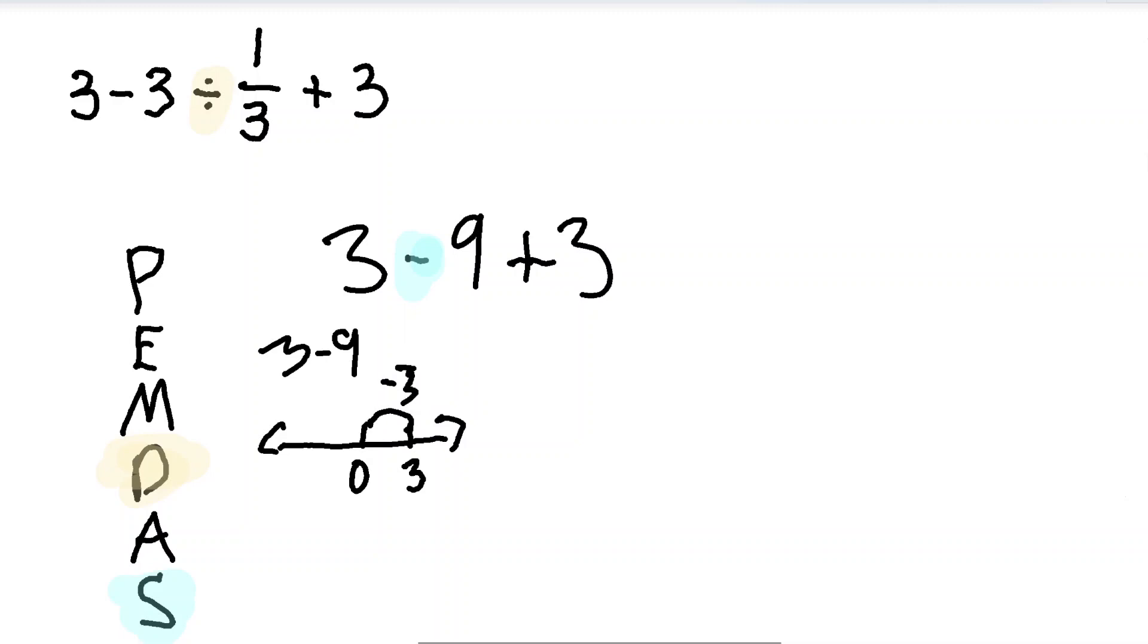So we already took 3 away from that 9, so how much more do we need to take away? We need to take away 6. And what is 6 less than 0? Negative 6. That means 3 minus 9 is equal to negative 6. So now we have negative 6 plus 3 as our updated expression.